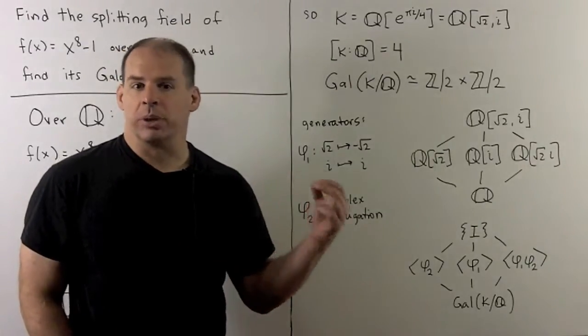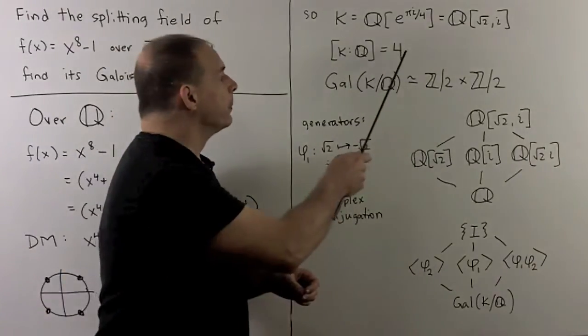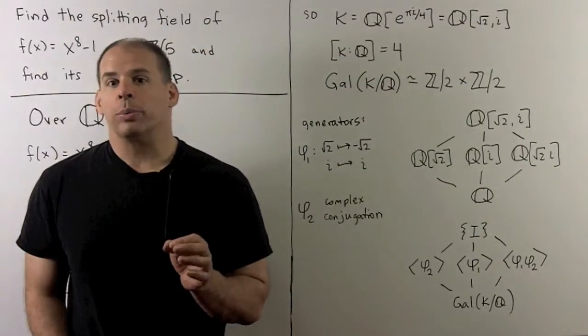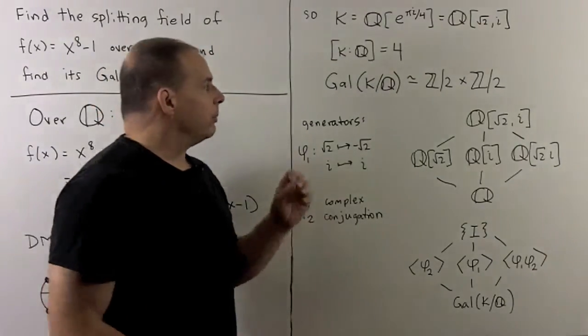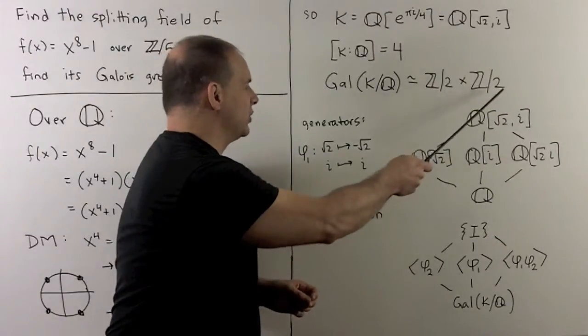Now, the degree of our splitting field over the rationals is equal to 4. That means the order of the Galois group is equal to 4. And we know it's isomorphic to Z2 cross Z2.